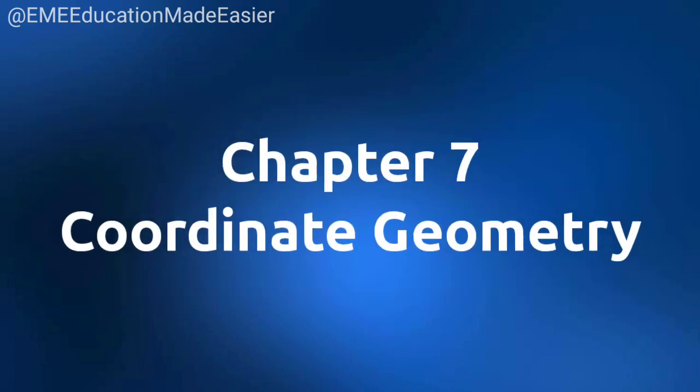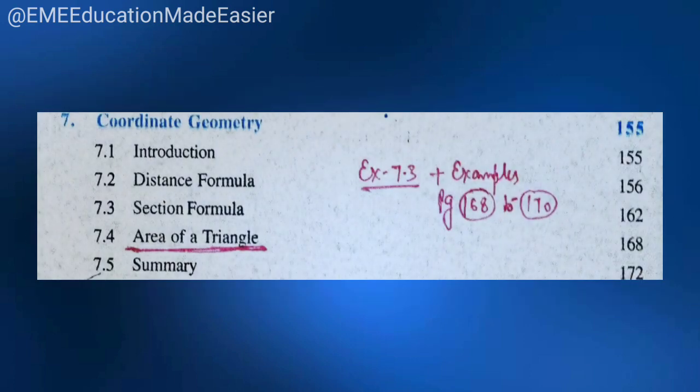Now coming to chapter number 7, Coordinate Geometry. All questions and sums related to areas of triangle are not coming. That is exercise 7.3 plus examples on pages 168 to 170 — they are not coming.